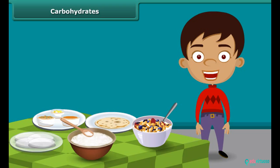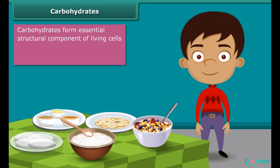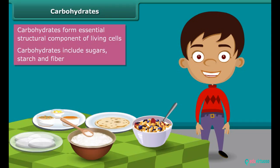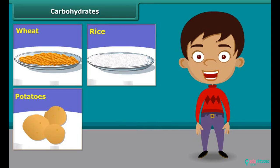First, carbohydrates. Carbohydrates form an essential structural component of living cells. They are the main source of energy for animals. Carbohydrates include sugars, starch, fiber, etc. They are mainly found in wheat, rice, potatoes, corn and maize.